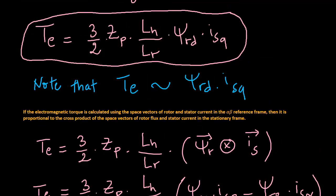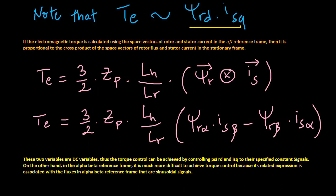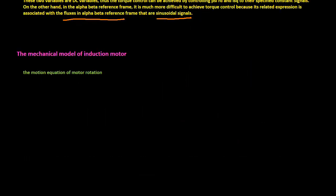Note that the expression of electromagnetic torque in the DQ reference frame is only related to psi-rd and i-sq. These two variables are DC variables, so torque control can be achieved by controlling psi-rd and i-sq to their specified constant reference signals. On the other hand, in the alpha-beta reference frame, it is much more difficult to achieve torque control because its expression is associated with fluxes in the alpha-beta reference frame that are sinusoidal signals.